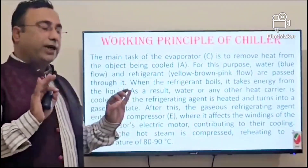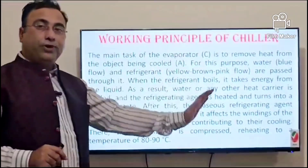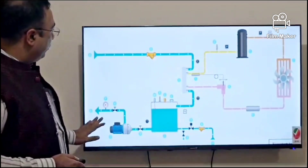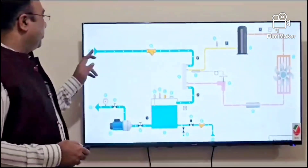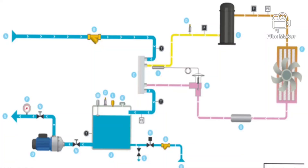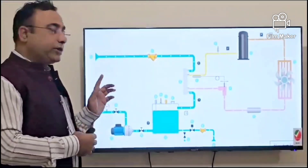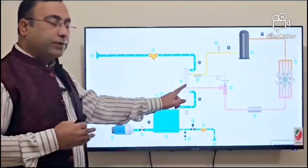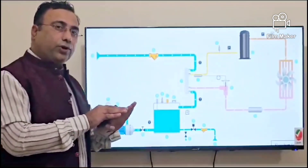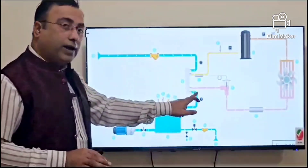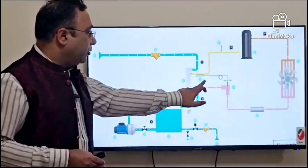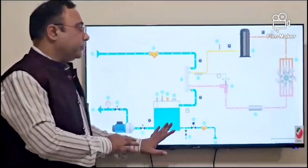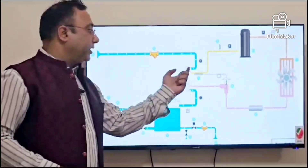Overall, the main task of the evaporator is to remove heat. Looking at this drawing, water comes in from your machine — in our case it is blow molding — and passes through the evaporator. The hot and cold mediums come into contact with each other, the heat is transferred, and the cooled water returns to your machine or oil cooler.